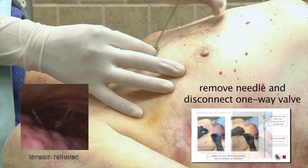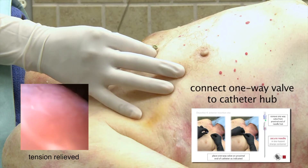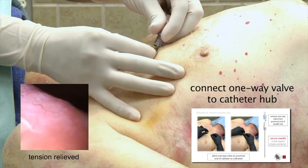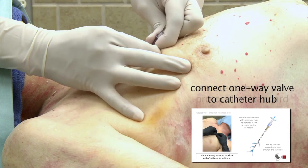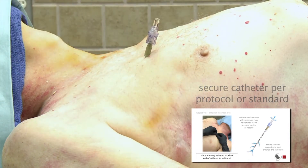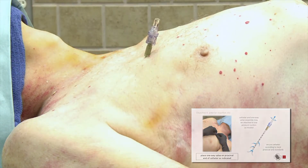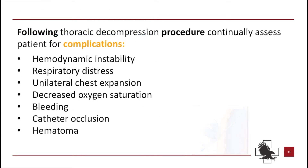Remove needle and disconnect one-way valve. Connect the one-way valve to the catheter hub. Secure catheter per protocol or standard. Monitor your patient for successful decompression or the development of any complications. Be safe.